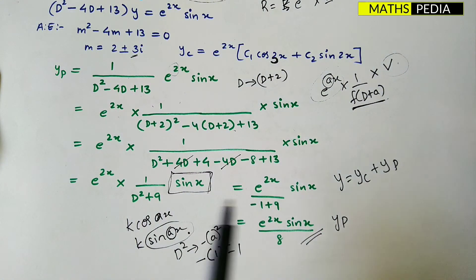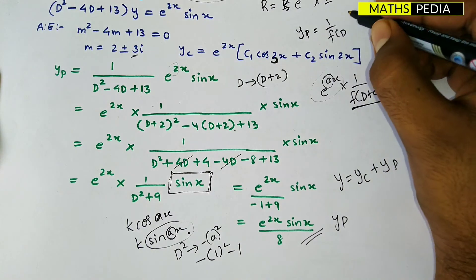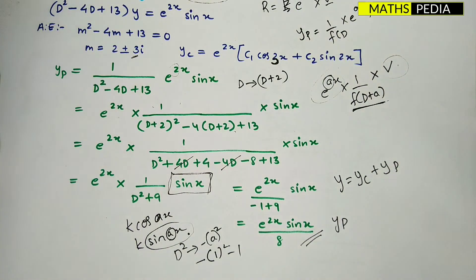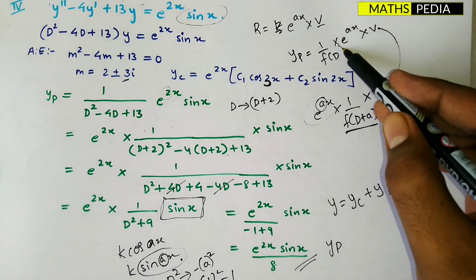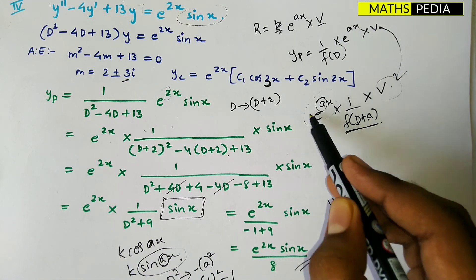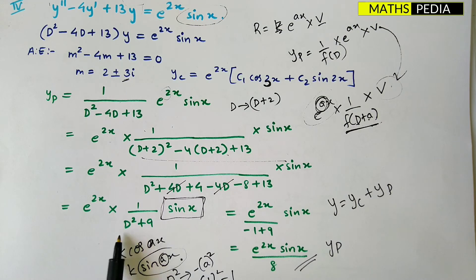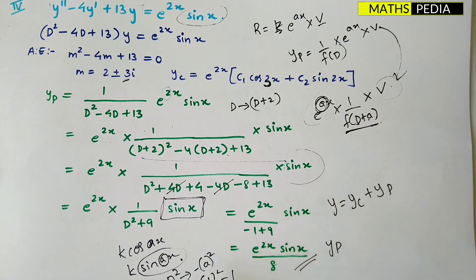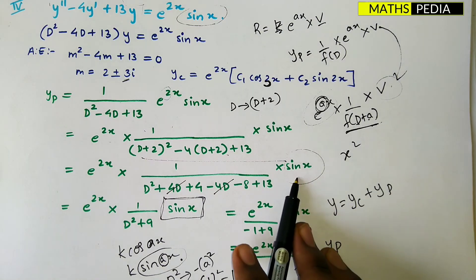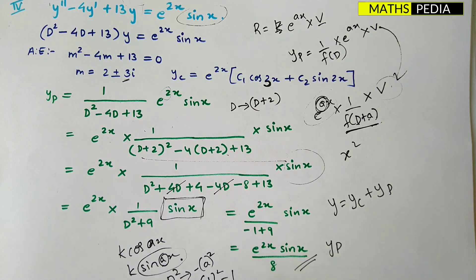To summarize the steps: first, write yp as 1/f(D) into e^(ax) into v. Second, replace D with D+a in f(D), where a comes from e^(ax). Third, simplify the operator expression. Fourth, identify v — if v is sine x, replace D² with −a²; if v is a polynomial like x², use the division method. Apply the appropriate case to get the final solution.